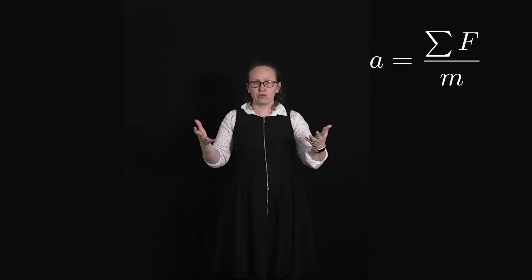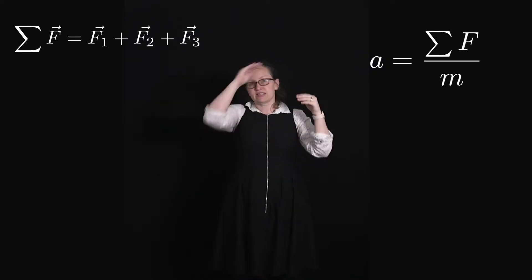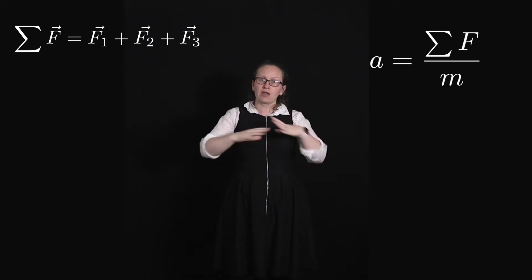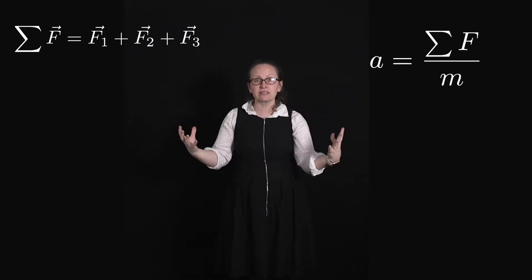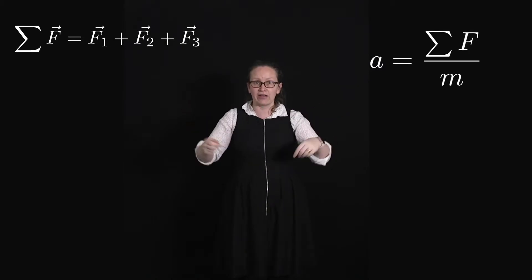So if there were three forces acting on an object, say F1, F2, and F3, then the sum of the forces would be sigma F equals F1 plus F2 plus F3, where all of these forces are vectors, so they need to be added vectorially, i.e. head to tail, or you can use components if that's easier.